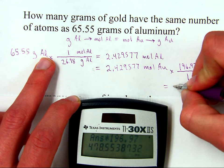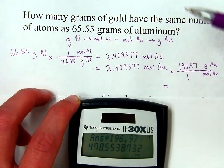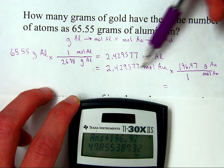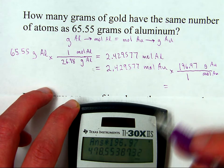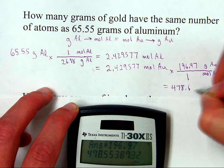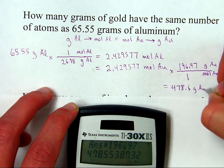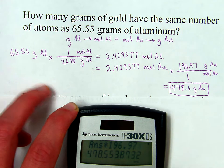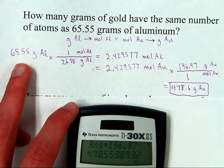Let's see, I'll put that down here. Now let's round for significant figures. Four sig figs, four sig figs. Five sig figs, so I'm going to round to four significant figures, or 478.6 grams of gold has the same number of atoms as 65.55 grams of aluminum.